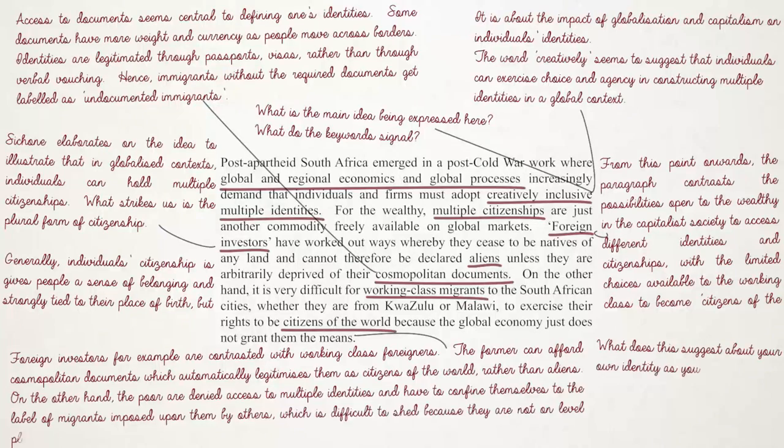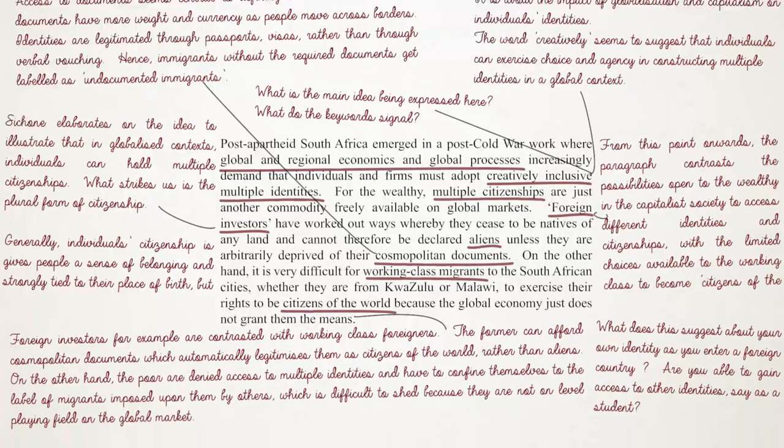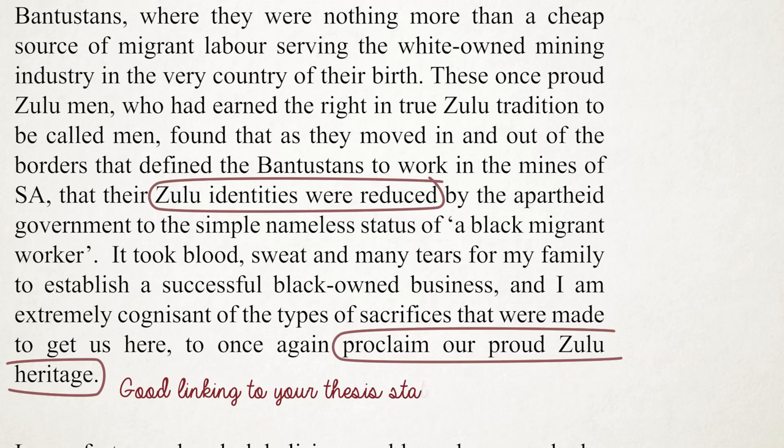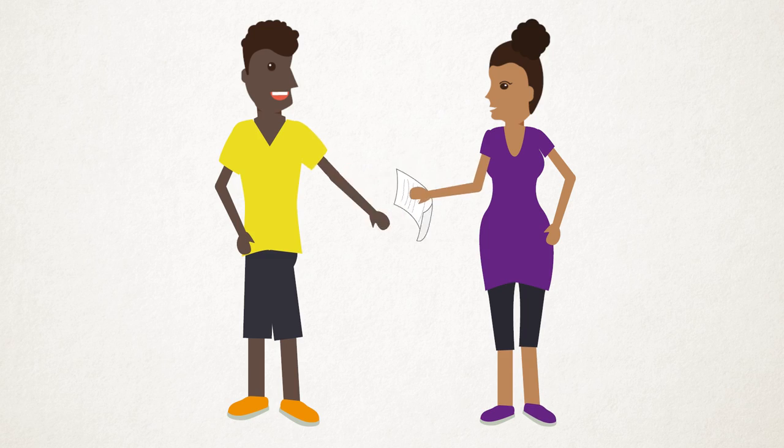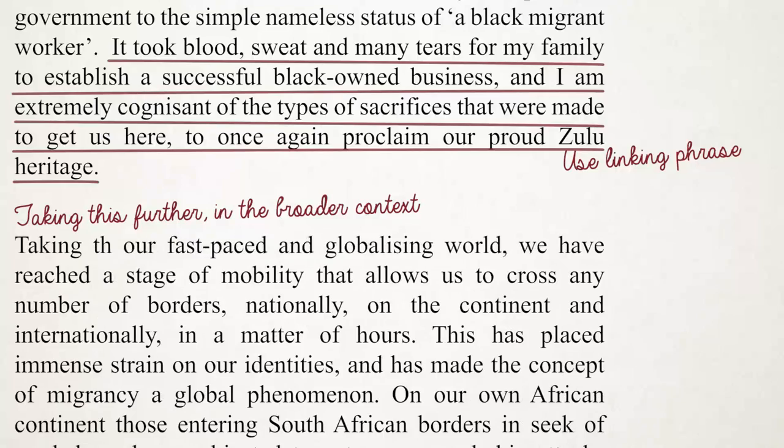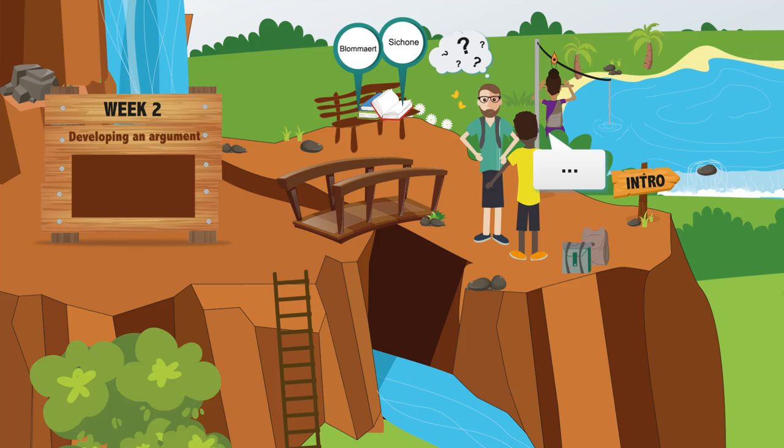These are some of the themes that you will grapple with as you learn how to write your world. Critically engaging with these themes, with the course readings, with your peers' work and your own work are central to producing a well-written essay. An important part of writing is also to revise your work and find people to read and give you feedback. You will have some opportunities to practice editing your work and the work of others.